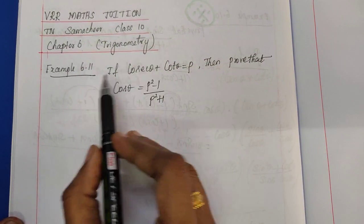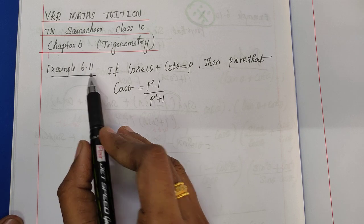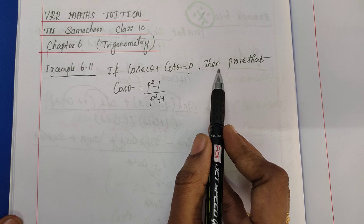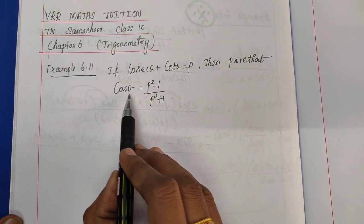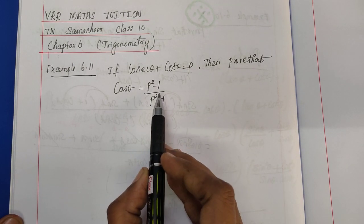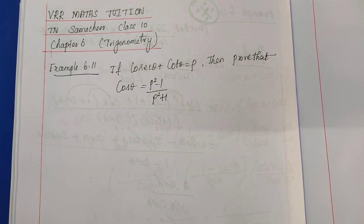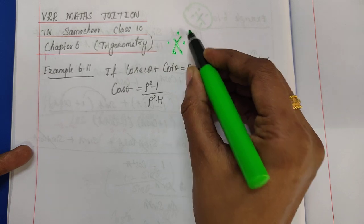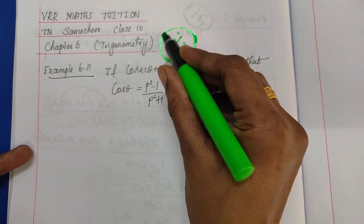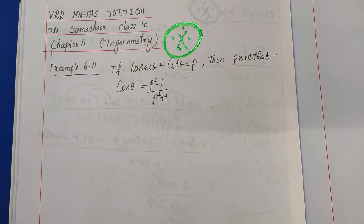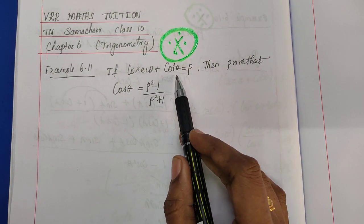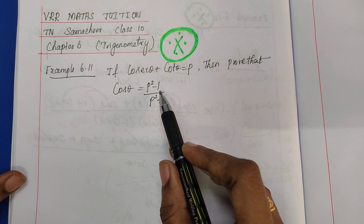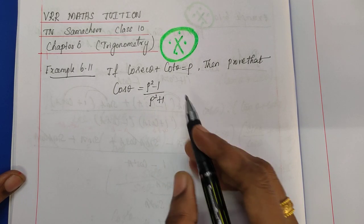Chapter 6 trigonometry, example 6.11. If cosecant theta plus cot theta is equal to p, then prove that cos theta is equal to p squared minus 1 divided by p squared plus 1. This is a very important question.